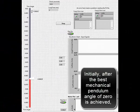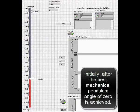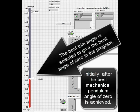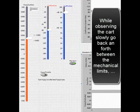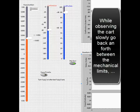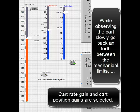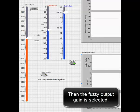Initially, after the best mechanical pendulum angle of zero is achieved, the best trim angle is selected to give the best angle of zero in the program. While observing the cart slowly go back and forth between the mechanical limits, cart rate gain and cart position gains are selected.